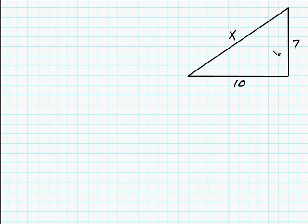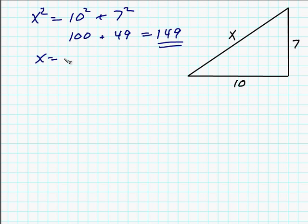Well, let's set this up with the Pythagorean Theorem and see. The Pythagorean Theorem says that this length squared, so x squared, is equal to the sum of the squares here. So it's 10 squared plus 7 squared. Well, it's easy enough to find 10 squared and 7 squared. This is 100, and this is 49, so the answer is 149. But that's x squared, and the question is, what is x?